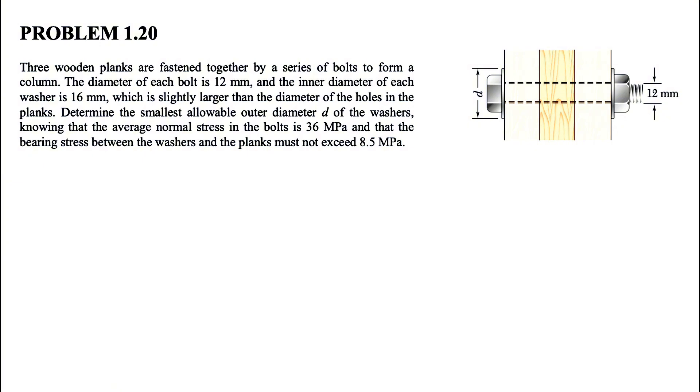We know the diameter of each bolt is 12 millimeters, and the inner diameter of the washer is 16 millimeters. So if you want to look at it, it will be something like this. This will be 16 millimeters, and as we can see it's a little bit larger than the diameter of the holes in the planks.